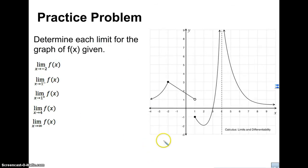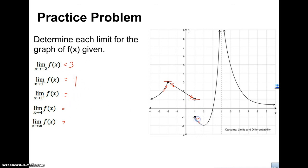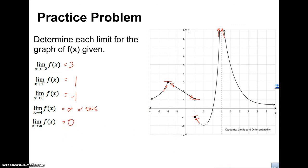Here is a practice problem — I encourage you to pause and try it out. Here are the solutions: as X approaches negative 2 from both sides the values are equal, so the limit is 3. As X approaches 1 from the left, the limit is 1; from the right, it's negative 1. As X approaches 4, it goes up from both sides, so this is positive infinity, or we can say does not exist. As X approaches infinity, there appears to be a horizontal asymptote at Y equals 0, so the limit is 0. That's it for today, thanks.